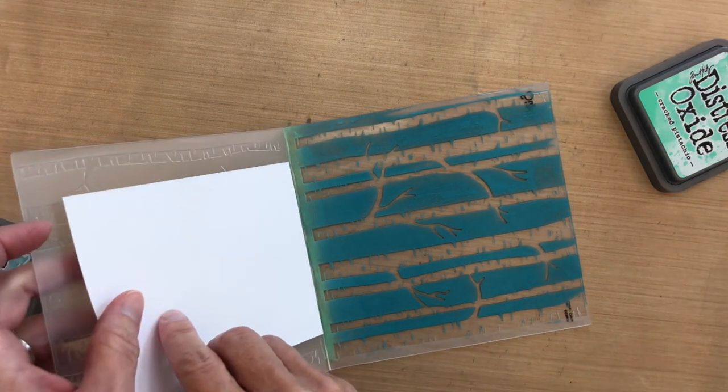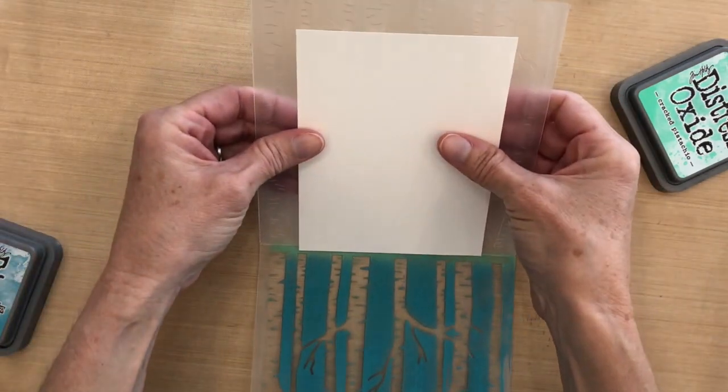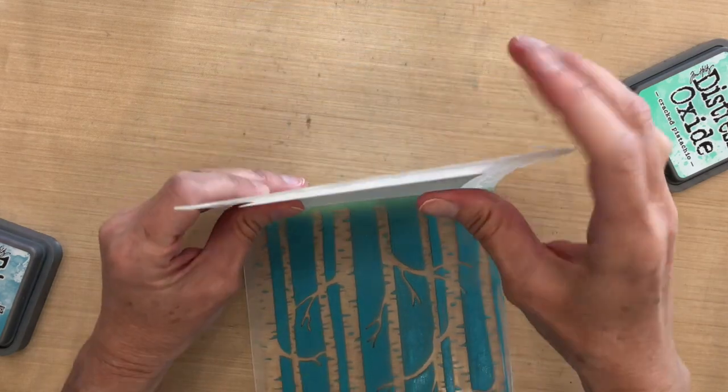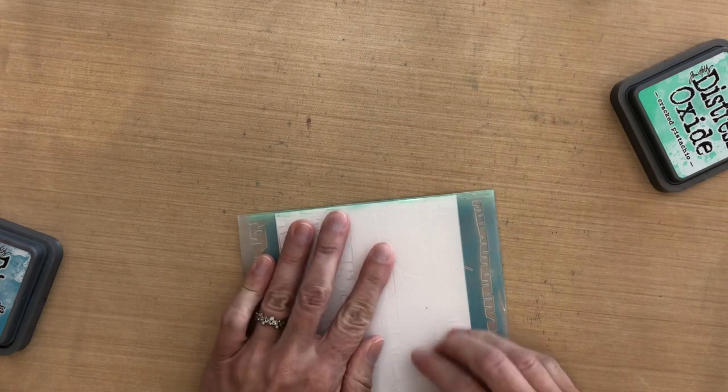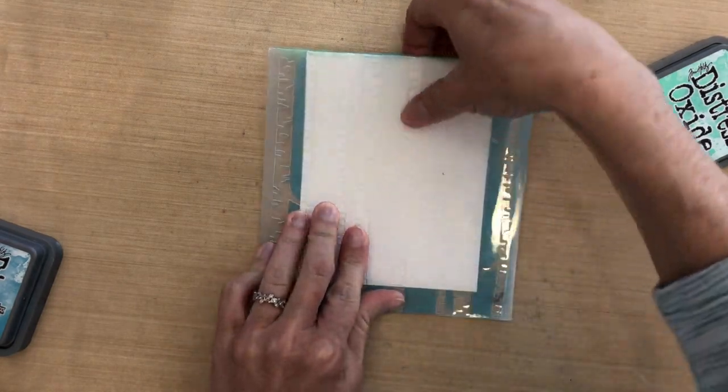Once I get that all sponged out, I'm going to put my cardstock in. This is Neenah Solar White, just an A2 size. I'm going to fold it up and put it into my Big Shot. I want to make sure the edge of my cardstock is right there in the crease so I get that full area at the bottom that has the Pistachio.